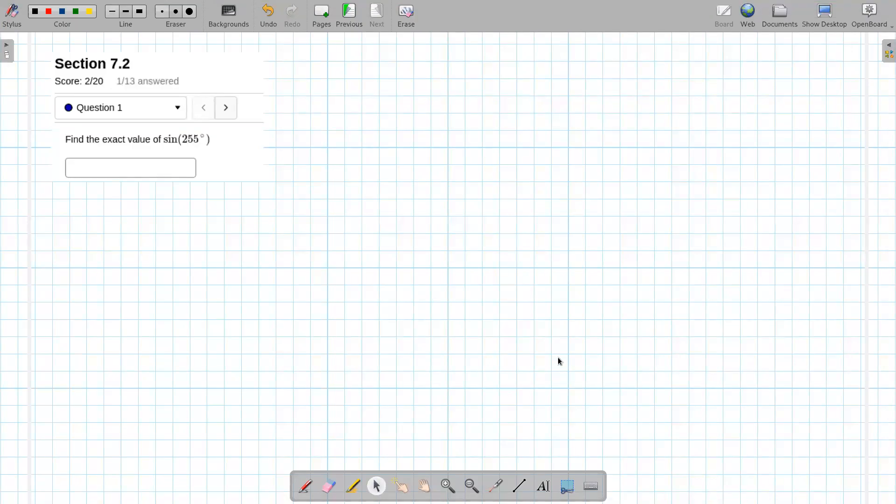All right, we want to find the exact value of sine of 255 degrees, so let's draw a unit circle and figure out how to do this. Whoa, that is not a good unit circle. Let's try that again. That's a little better. Some days I'm good on my magic whiteboard, other days I'm not.